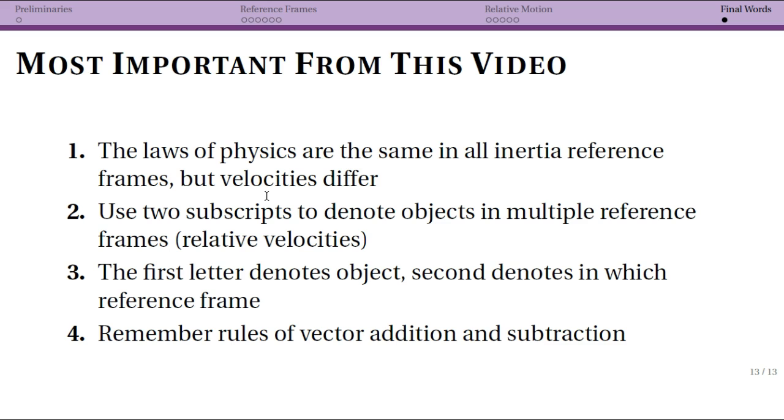When we're doing math to denote objects in different reference frames, you're going to use two subscripts and this allows you to work with relative velocities. But make sure that you use this common notation where the first letter is denoting the object that that velocity is referring to and the second denotes in which reference frame it is. So again, vAB would be Amy with respect to Bill.